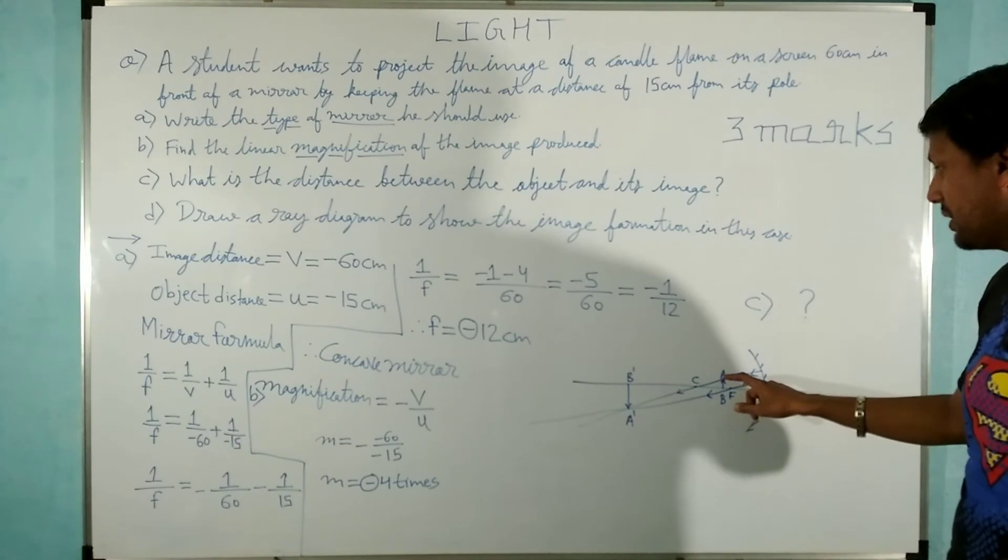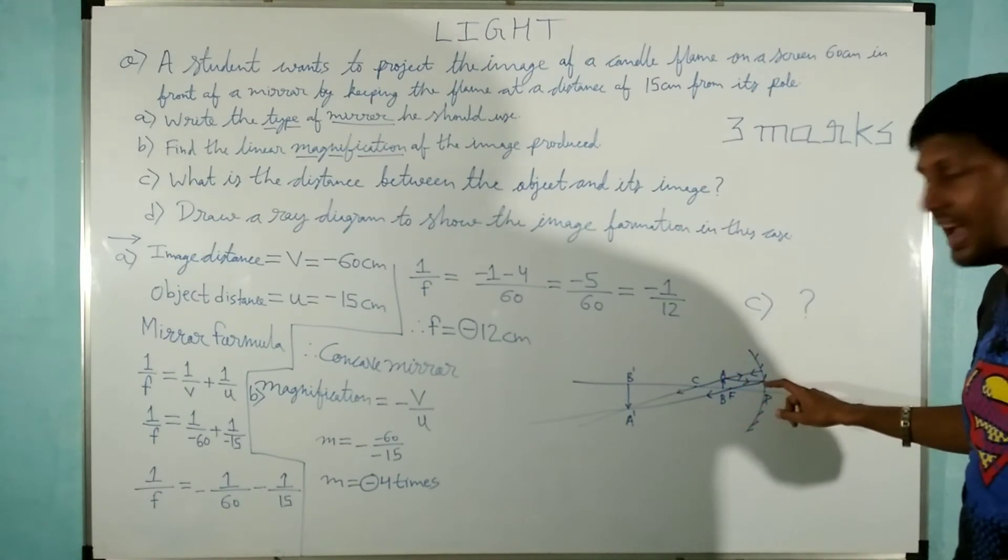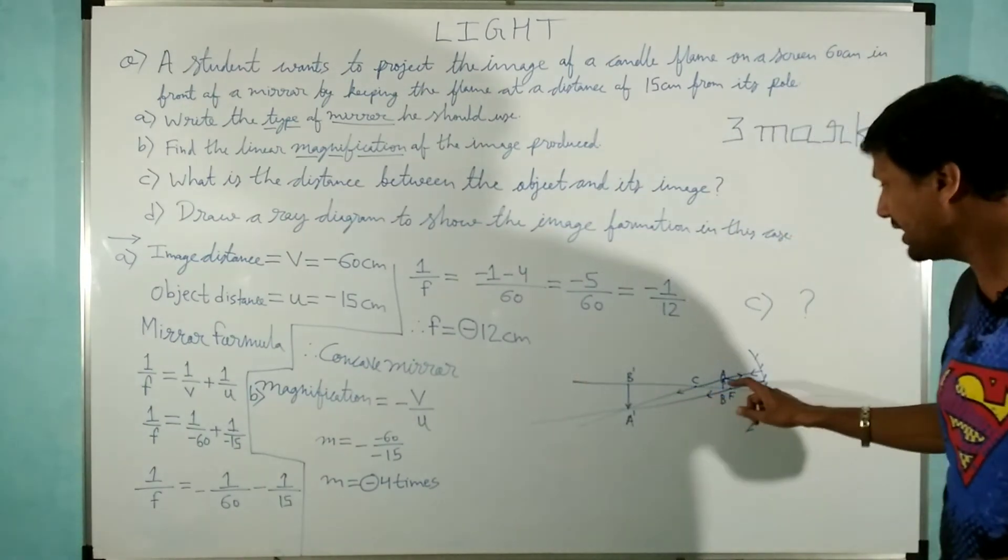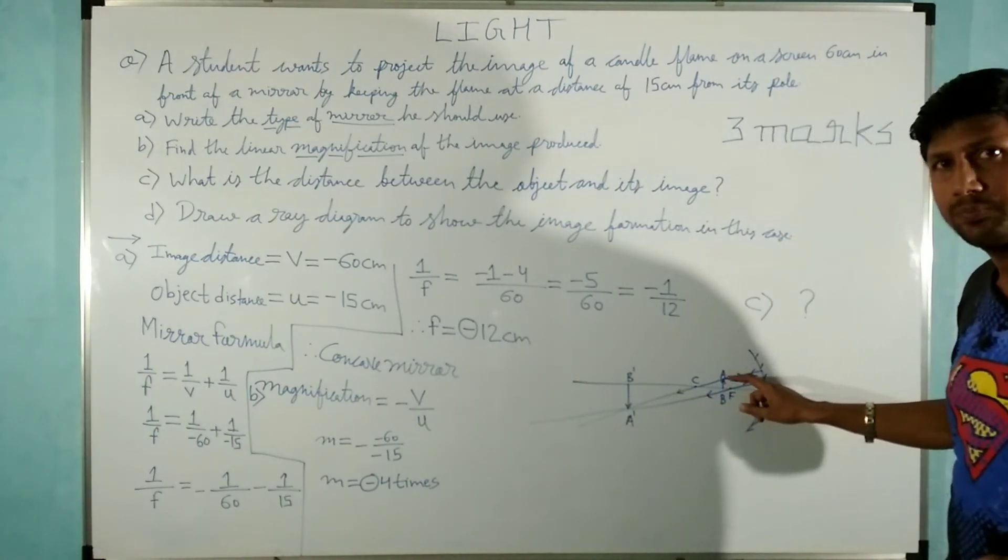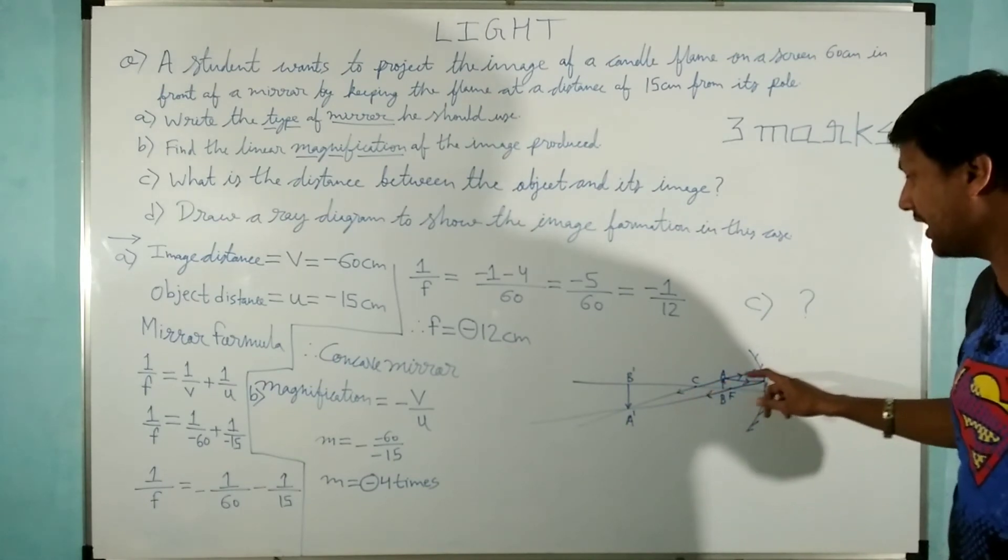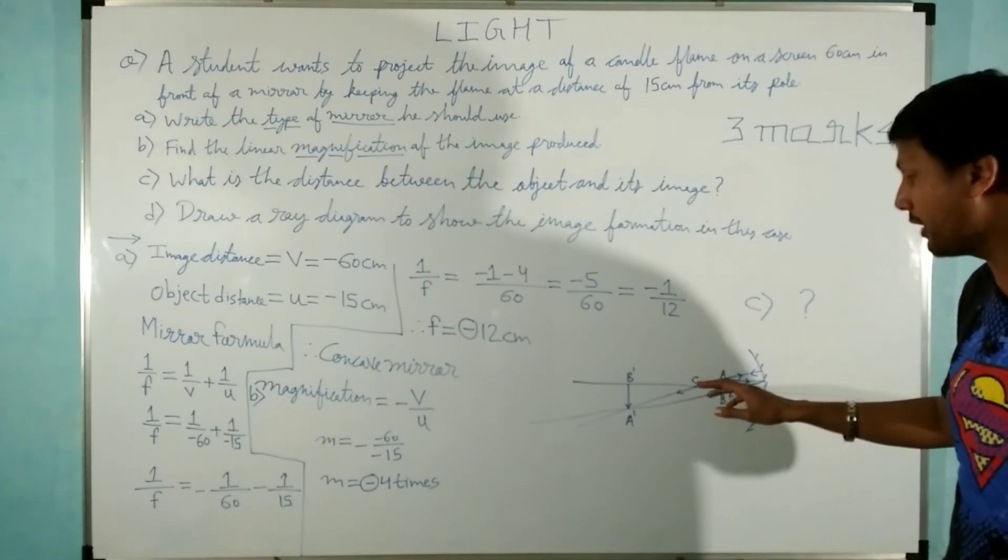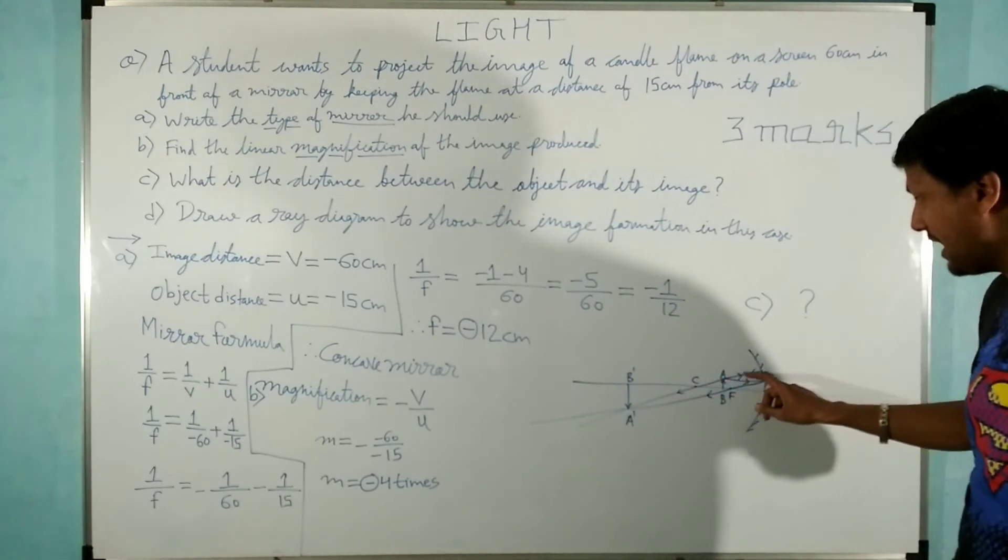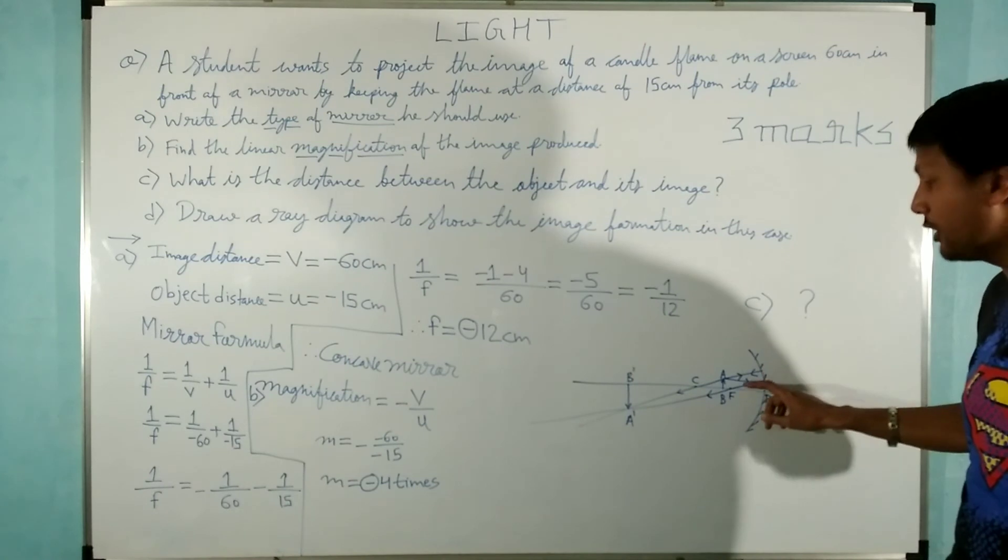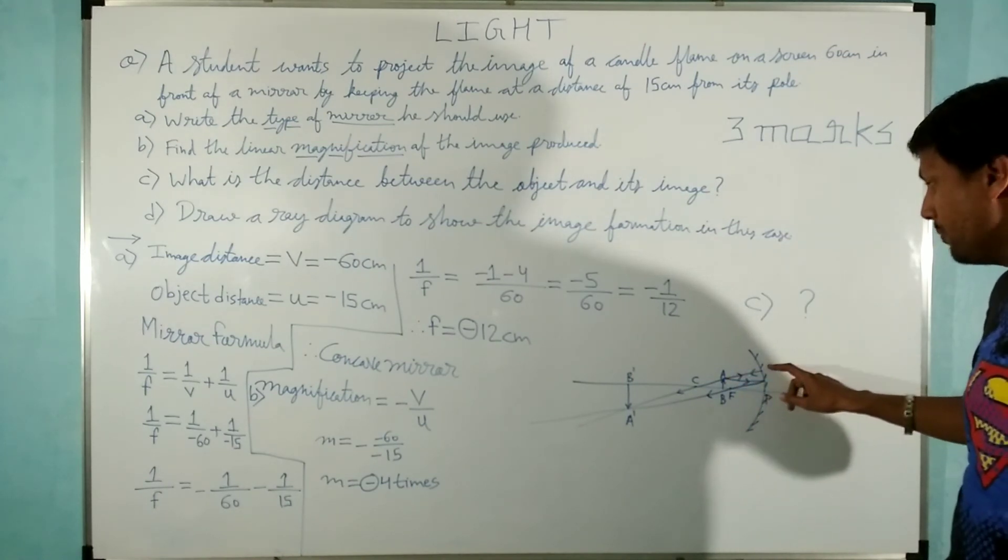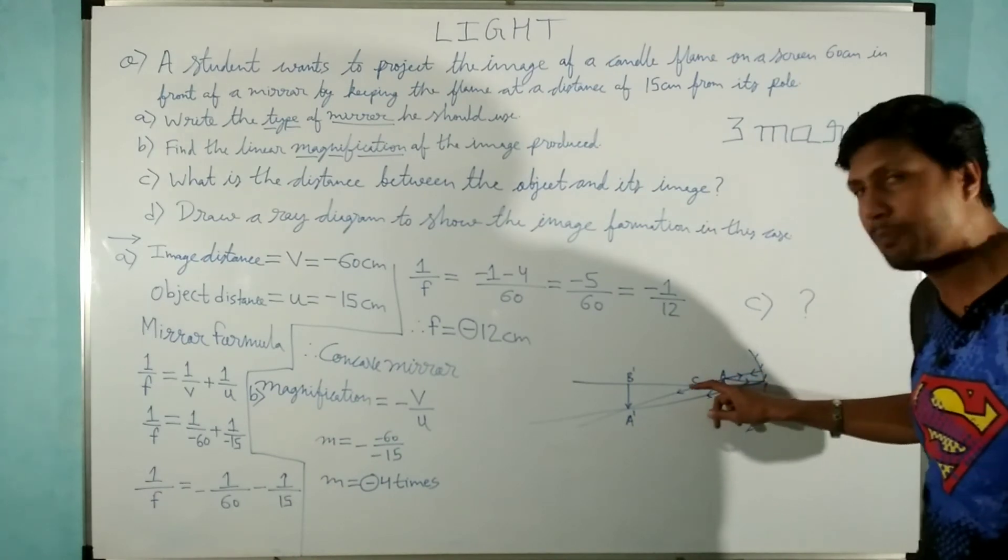So we can say that any incident ray parallel to principle axis after reflection passes through the focus and any incident ray which is passing through the center of curvature remains undeviated. It does not change its path, after reflection it will go through the same path from here to the mirror.